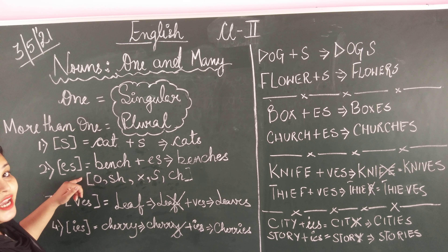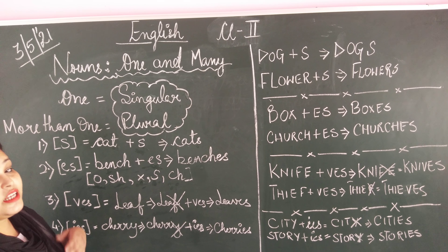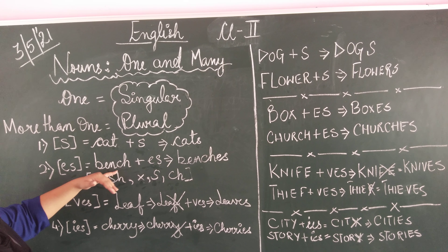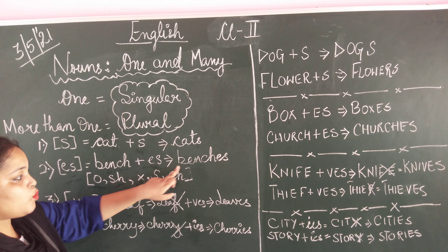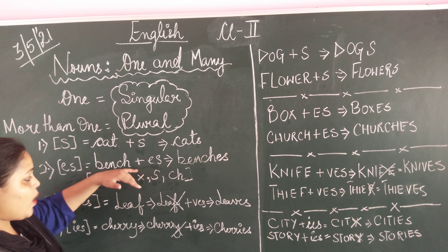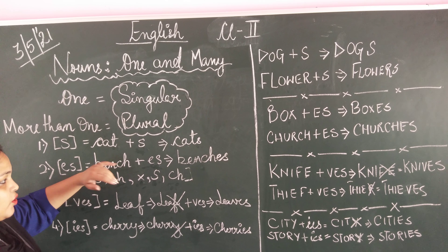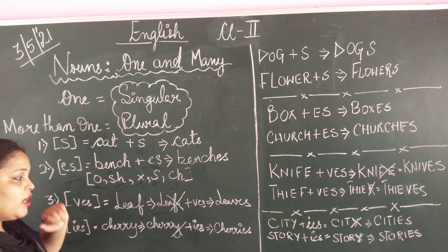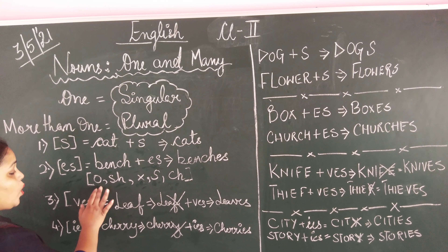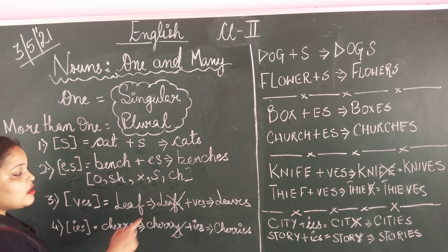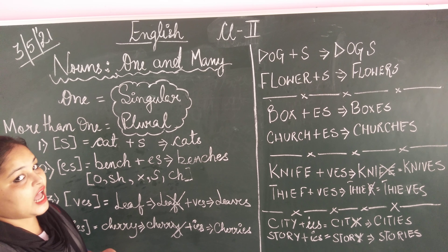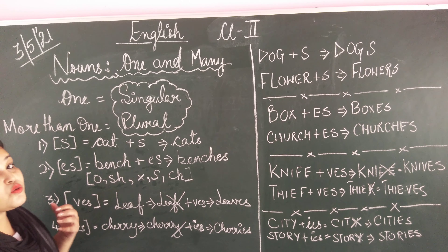Now we are going to see adding ES. How we are going to add ES to some words to make singular into plural. The words which end in O, SH, X, S, and CH are always added with ES to convert them into plural form.